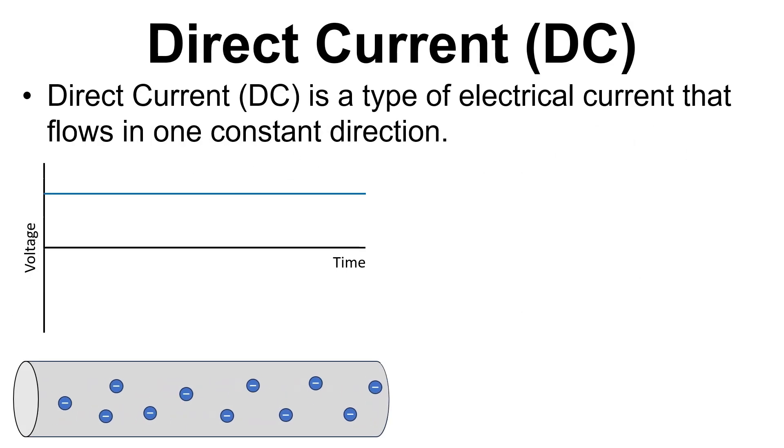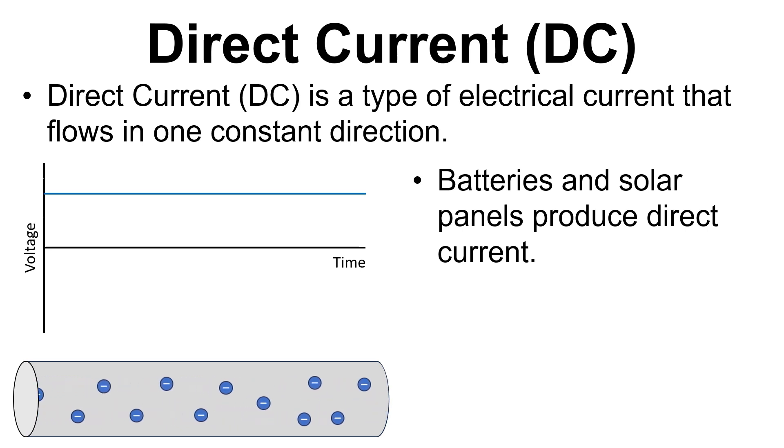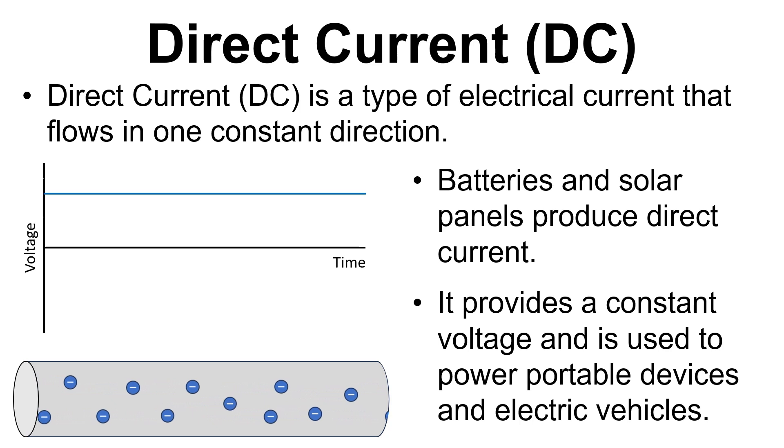So direct current is a type of electrical current that flows in one constant direction. Batteries and solar panels produce direct current and it provides a constant voltage that's used to power portable devices and electric vehicles, for example.